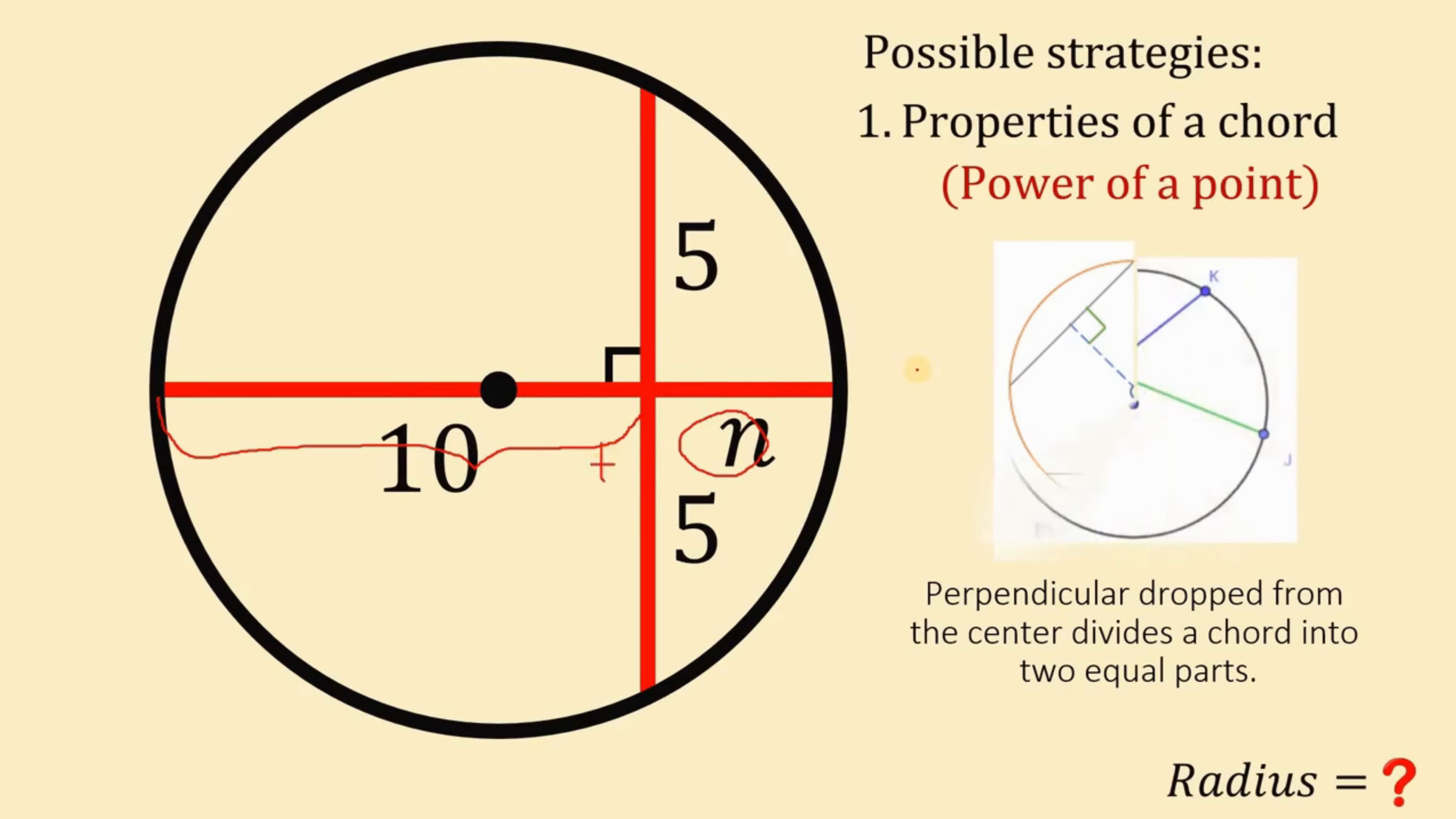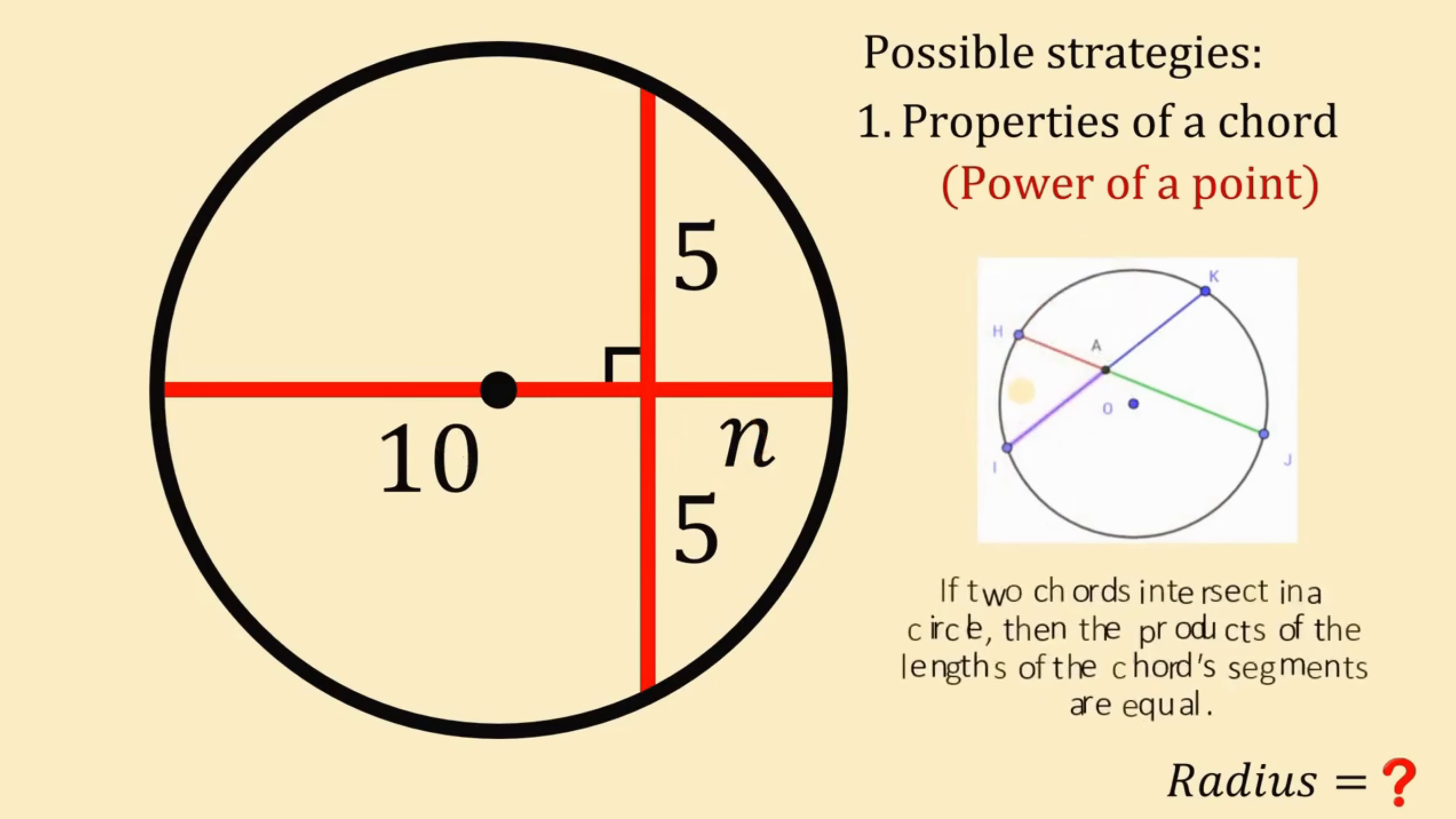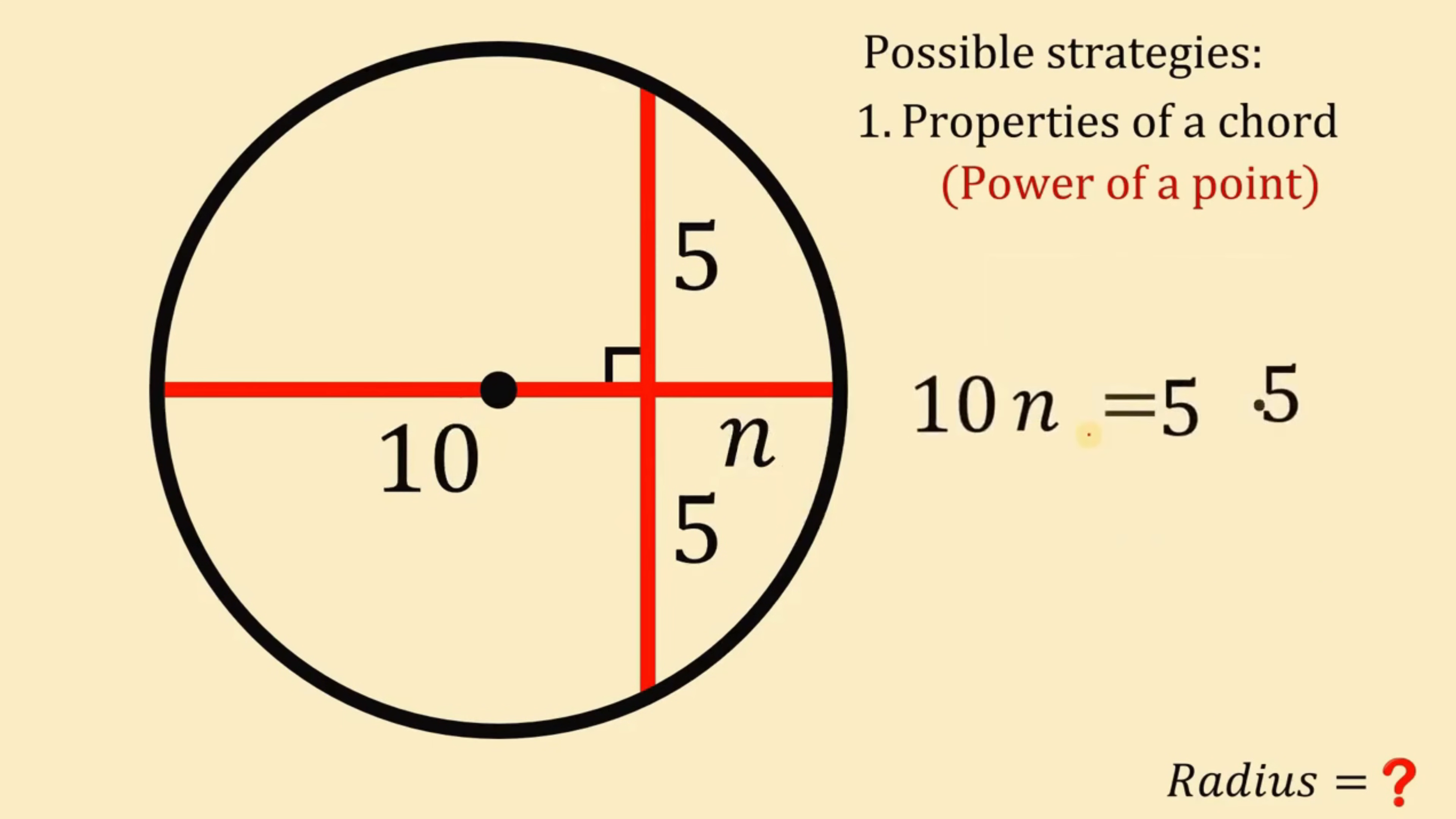This is also called as the chord-chord power theorem. Now it says that if two chords intersect in a circle, then the product of the lengths of the chord's segment are equal. So we can say that 10 multiplied by N must be equal to 5 multiplied by 5. So we have now an equation in terms of N. We have 10N equals 5 times 5. Now 5 times 5 will give us 25.